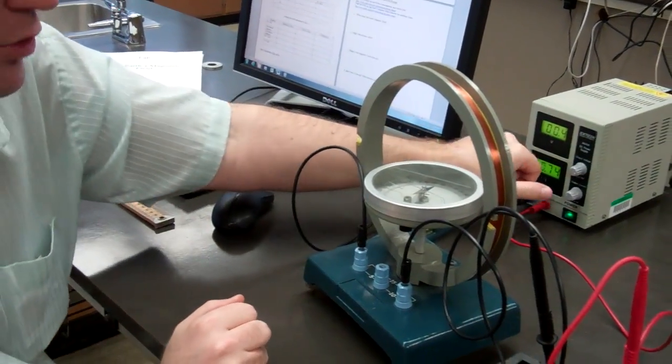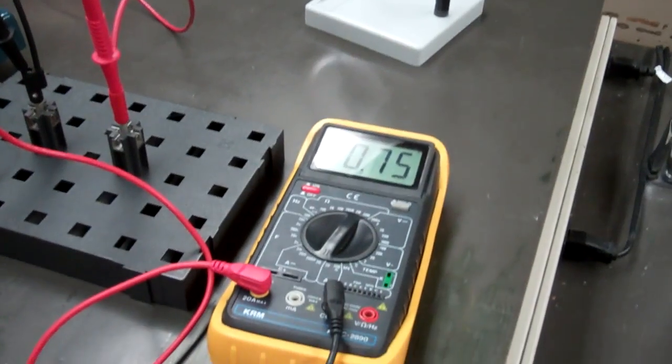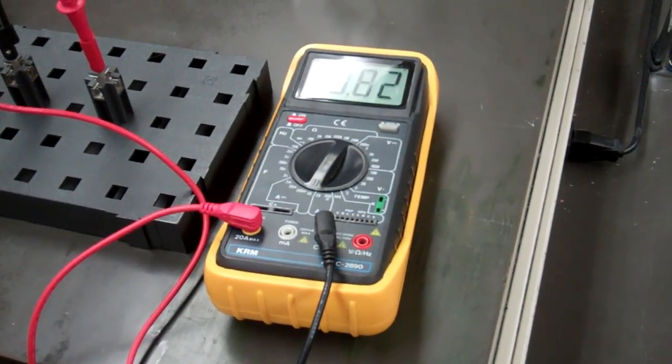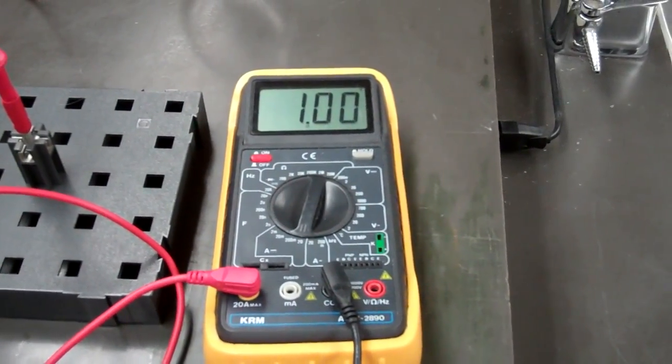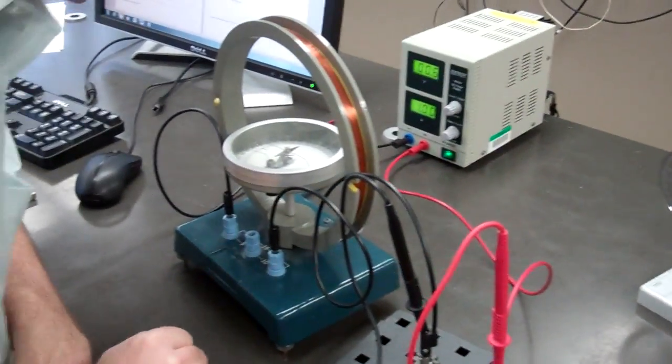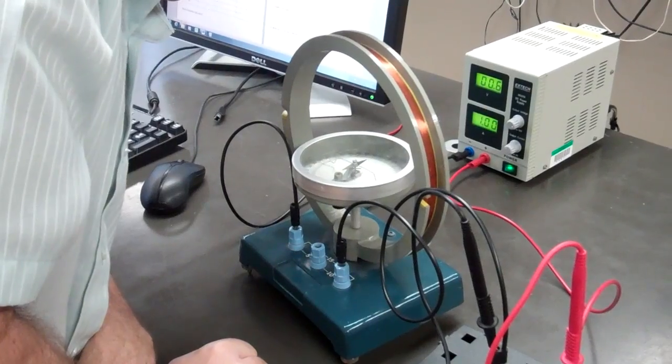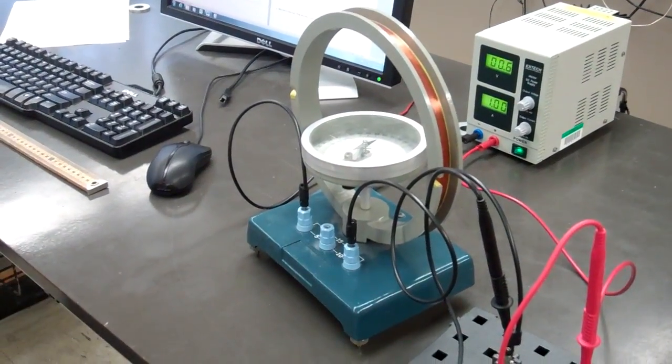And then we increase it to 1 amp and we measure it again. And now it says it's at 10 degrees. 90 minus 10 would be 80.